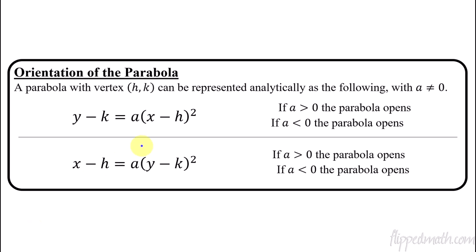Now let's do the orientation. In the form where x is being squared — x minus h — h and k is just the vertex. We've done this a lot: h is with x, giving the x value of the vertex; k is the y value. If a is positive, the parabola opens up, and if a is negative, the parabola opens down. That's exactly what we've been doing for a year or two with parabolas.